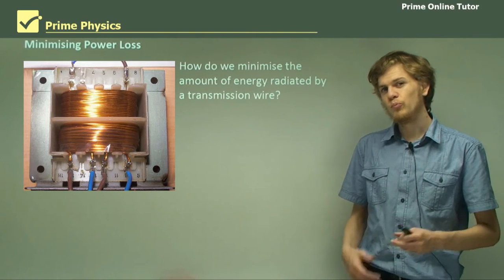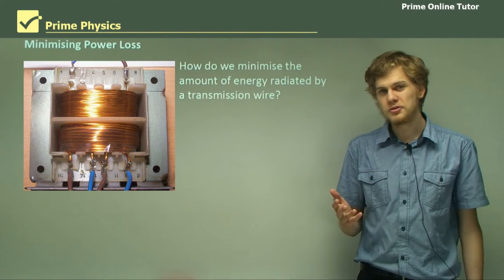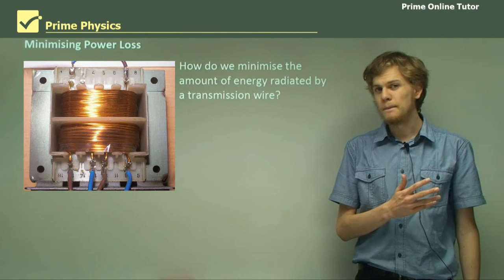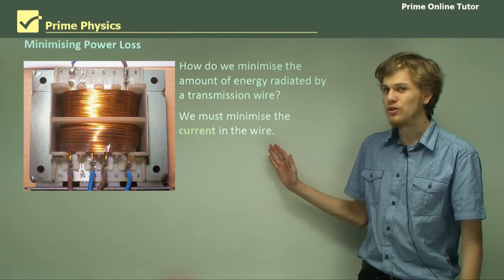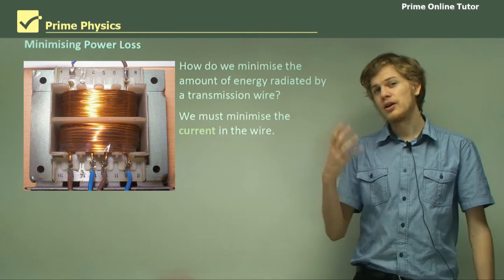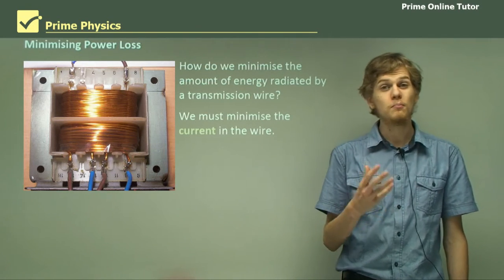So how do we minimize the amount of energy that the wires lose as it carries electricity from place to place? Well, we know from our equation that P loss equals I squared R which means that we must minimize the current in the wire. By making the current smaller we can make the power loss much smaller.